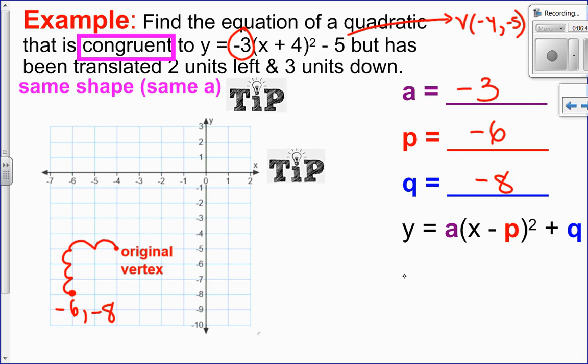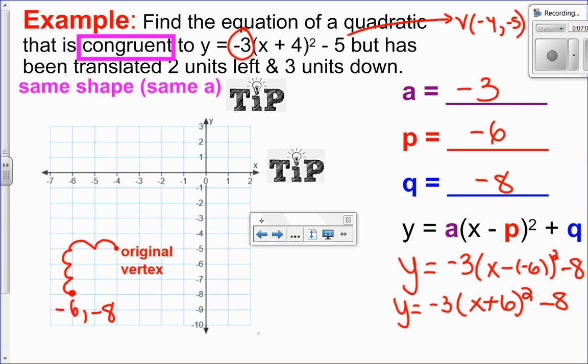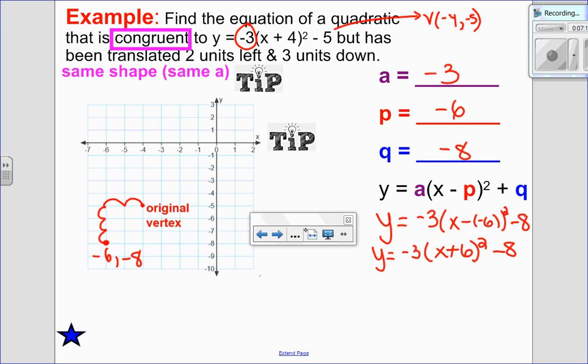So that means that P is negative 6 and Q is negative 8. So put this into our format here. Here we have an equation Y equals negative 3 X minus negative 6 all squared minus Q. So Y equals negative 3 X plus 6 all squared minus 8.